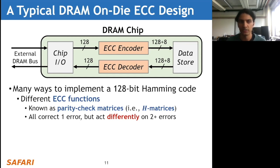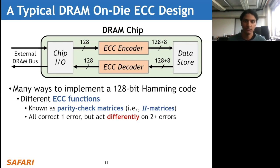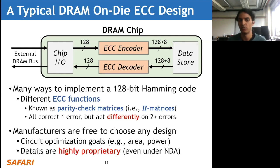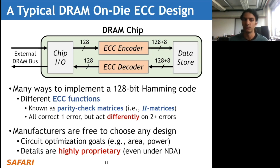All these different implementations essentially correct one error, but they act differently when faced with two or more errors - this difference is in how the parity check matrix is designed. Manufacturers are free to choose any parity check matrix they want, potentially based on different circuit optimization goals such as optimizing for chip area or power consumption. The details of their particular choice are highly proprietary, even when using non-disclosure agreements with the manufacturers.